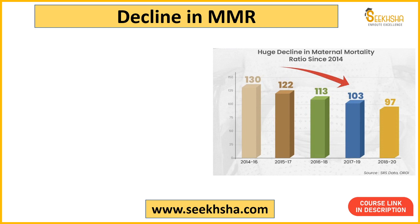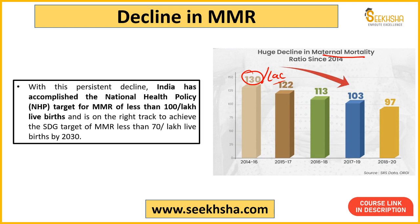Now, some achievements have been highlighted in this document. The day is 11th April — that is understood. Now there were some important details and data highlighted. First, the Maternal Mortality Ratio — the death ratio — has declined significantly. Around 2014-16 it was 130, and it has come down to 97. This is per lakh — per lakh women.